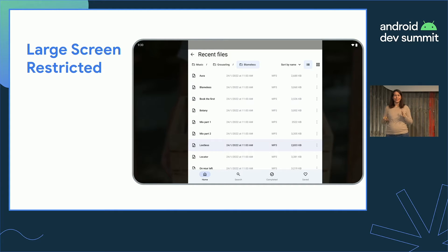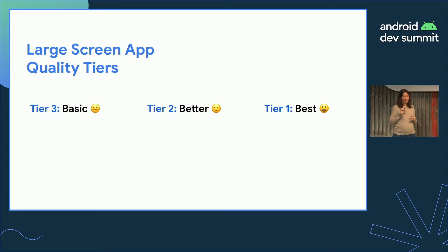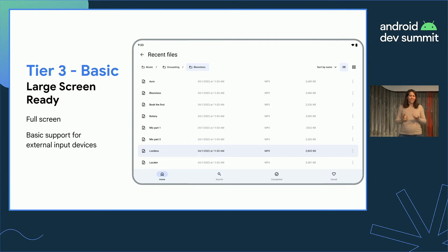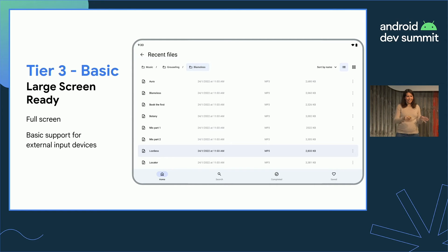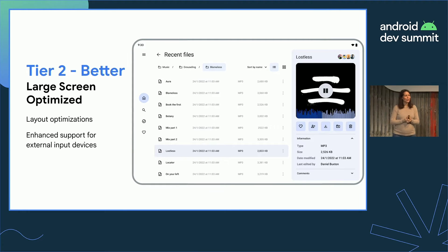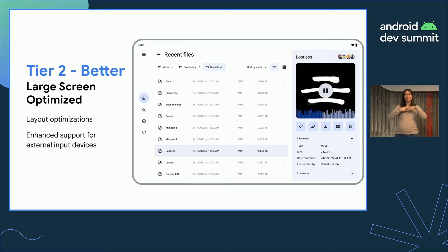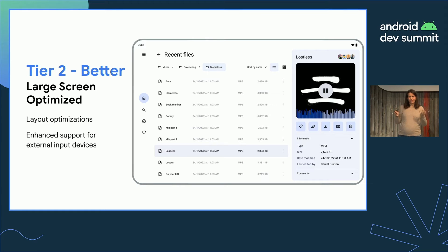Moving on to the real three tiers: basic, better, and best. In basic, your app runs on a large screen and fills up the screen space, but it doesn't look nice — we often find blown-up experiences. Tier two is what we consider apps that are really thinking about large screen and making good use of that space, maybe using multi-panel or canonical layouts, and starting to show support for input devices. This is the happy place we'd love to see all apps reach.